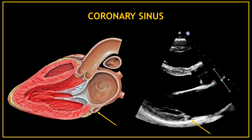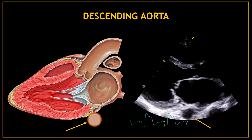Sometimes after the posterior mitral valve annulus and before the pericardium we can see a small and rounded black circle or echo-free space — this echo-free space corresponds to the coronary sinus. After the pericardium, sometimes you might see a bigger rounded echo-free space; this space corresponds to the descending aorta.